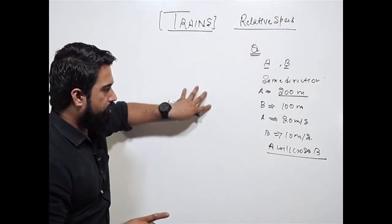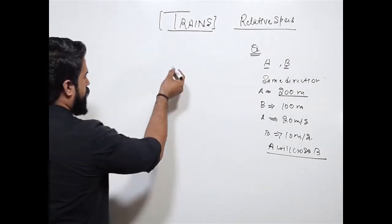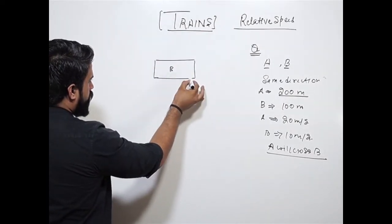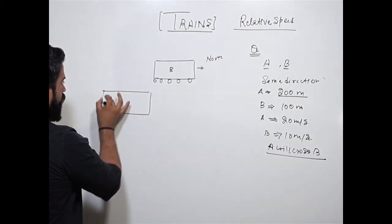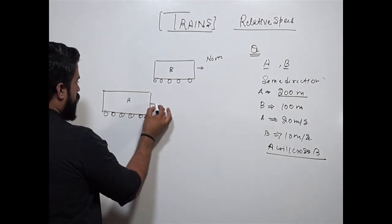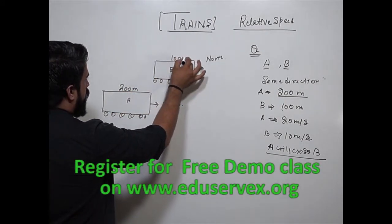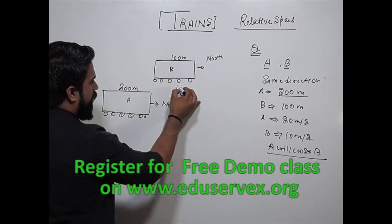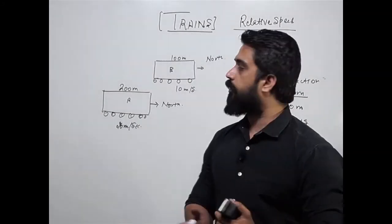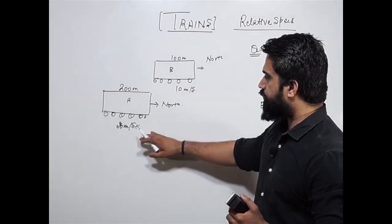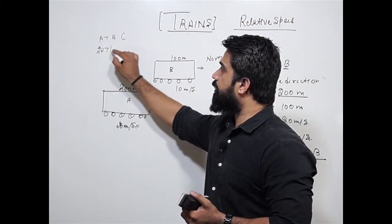First question: we have a train — this is Train B, moving in the north direction, and Train A also going north. B is 100 meters and A is 200 meters. The speed of the 100-meter train is 10 meters per second and the 200-meter train is 20 meters per second. You have to check that the speed of the train coming from behind must be greater than the other — A must be greater than B. Since A is 20 and B is 10, our condition is satisfied.